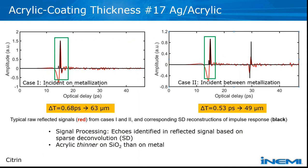The red curves are experimental data. We're focusing on the first big peak around an optical delay of 14 picoseconds. Because the duration of the peak is comparable to the time delay between the two echoes, the echoes overlap. We use a sparse deconvolution technique to extract where the two echoes are centered in time. Because acrylic has a refractive index of about 1.5, we can use that information and the speed of light to measure the thickness of the conformal coating.